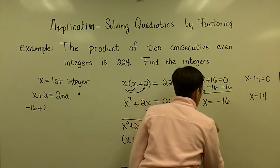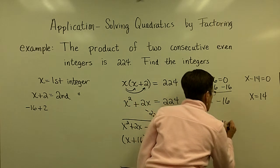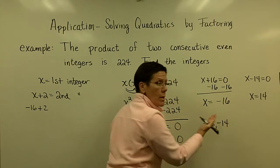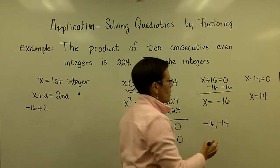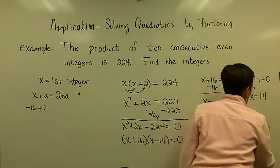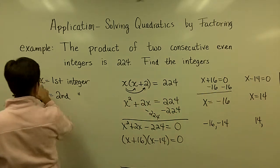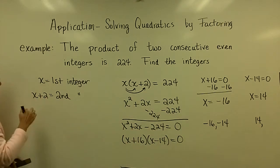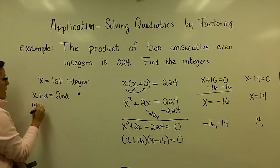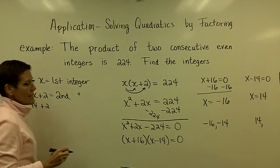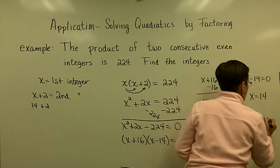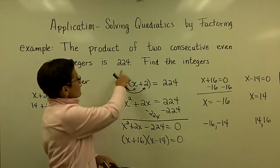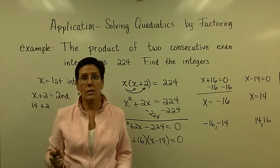So, one of the options is a negative 16 and a negative 14. Those are consecutive. This is the smaller number. This is the bigger number. And they are in a row. They are even numbers in a row. The other pairing is the number 14 for x. And if I come over here and put in 14 for x and add 2 to it, I get 16. So, here's my other pair of even integers whose product is a positive 224. You can check those to see if they work.